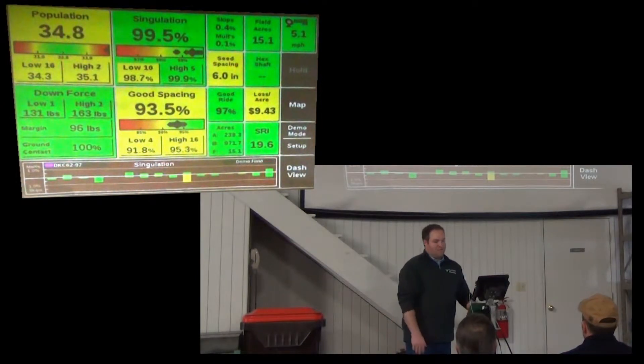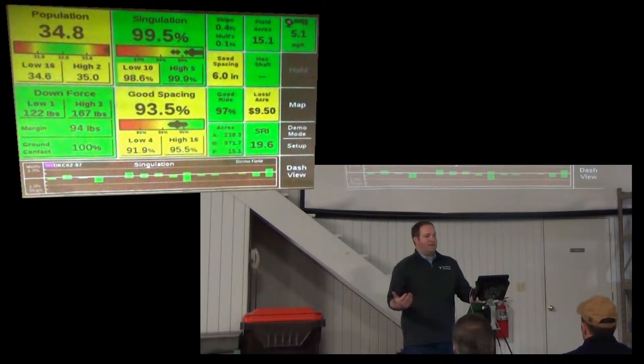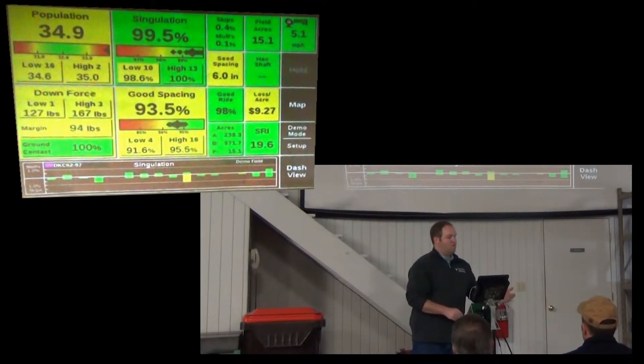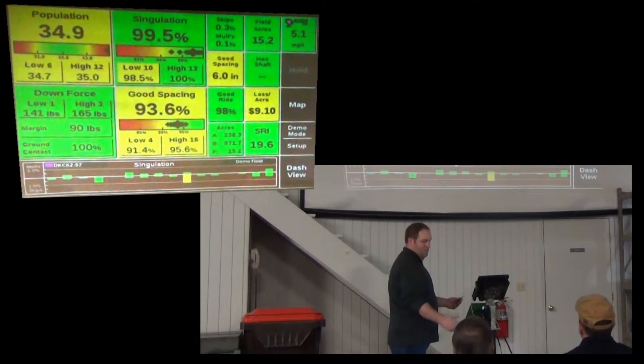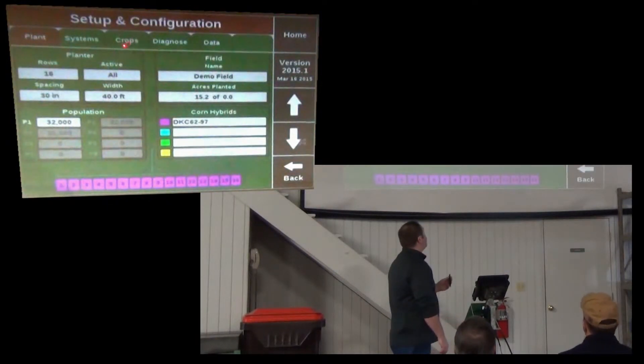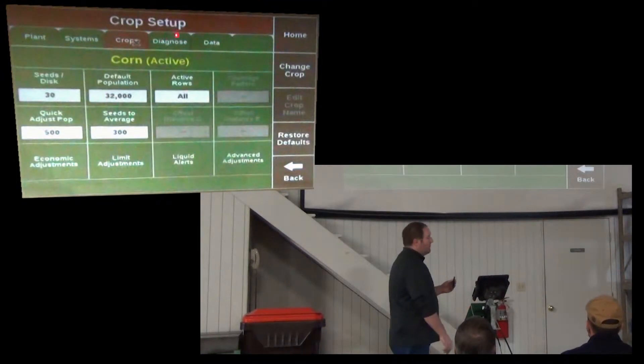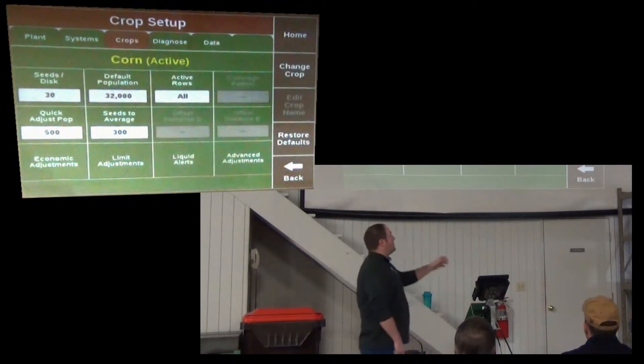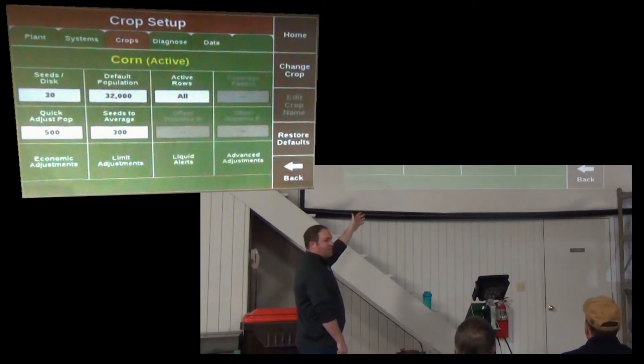Watch the planter. If I see things that are yellow, I can dive into it a little bit more. So to do this, we're going to set up on the right, crop setup at the top. Now with corn being the active crop, I'm going to adjust my limits for corn. So down here at the bottom, there's limit adjustments. I'm going to touch on that.